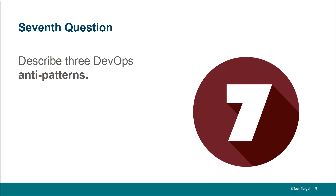Number seven: describe three DevOps anti-patterns. One anti-pattern is to just replace the development and operations silo with a new DevOps silo — that's not going to work. Another anti-pattern is not involving enough stakeholders. If you just get development and operations, you might be excluding people from the executive team, from security, or from the hardware provisioning team. That's another anti-pattern — not bringing enough people under the tent when you embark upon DevOps. A third anti-pattern, tying back to KPIs, is not doing a baseline at the beginning so you know where you are as you start your transition. Make sure you know where you're at, because if you don't, you don't know if you're progressing forward or moving backwards.